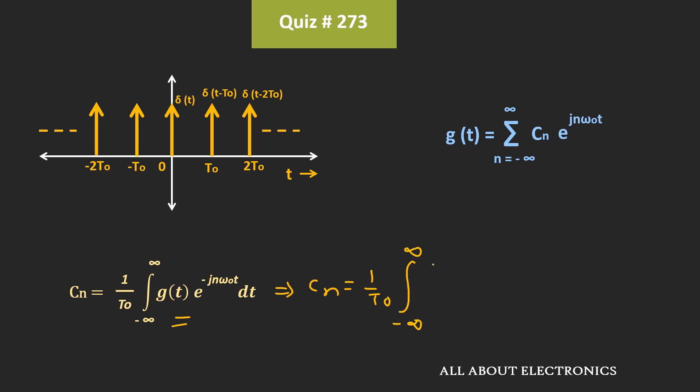minus infinity to plus infinity, this delta(t) times e to the power minus j times n omega t dt. And when we integrate this term, then we get 1 by t0 times e to the power 0. That is equal to 1 divided by t0.